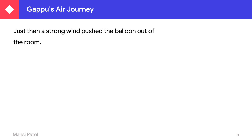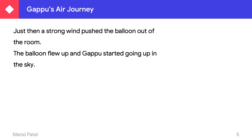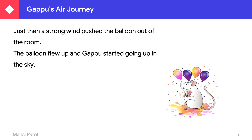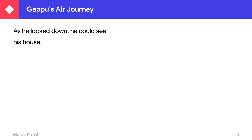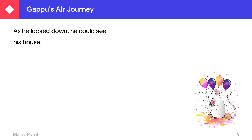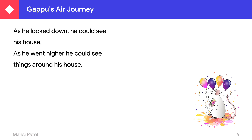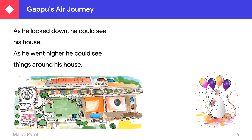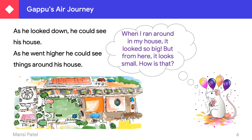Just then, a strong wind pushed the balloon out of the room. The balloon flew up and Guppu started going up into the sky. As he looked down, he could see his house from the sky. As he went higher, he could see more things around his house. He thought, 'When I run around in my house it looked so big, but from here it looks small!'